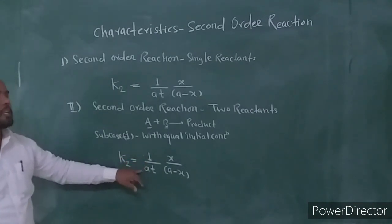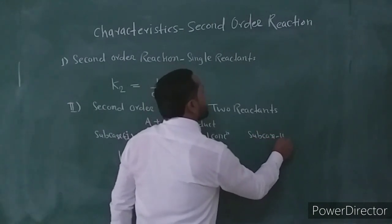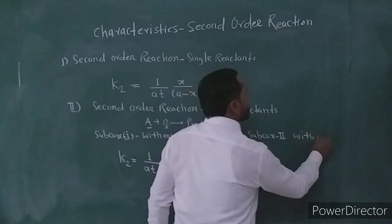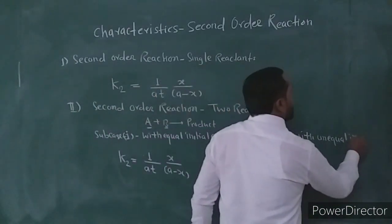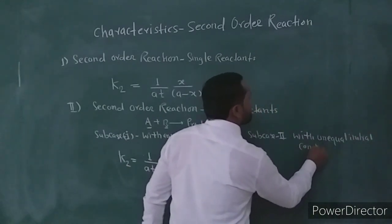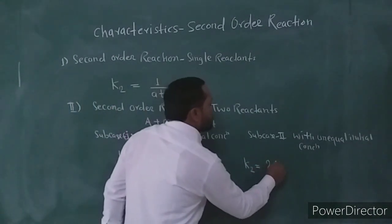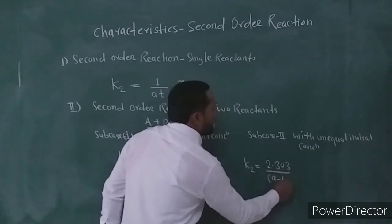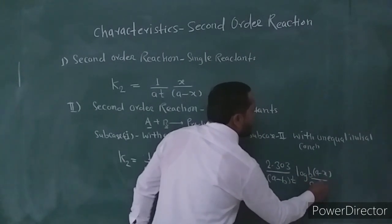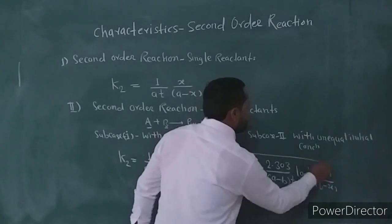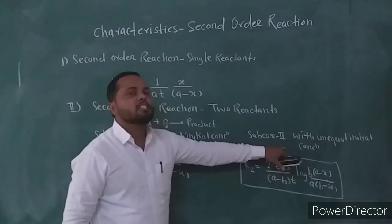Sub-case two: with unequal initial concentration. Reactants A and B have unequal initial concentrations. In this case, the integrated rate equation is: K2 is equal to 2.303 divided by (A minus B) into T, times log of B(A minus X) divided by A(B minus X). This is the integrated rate equation for the second-order reaction involving two reactants with unequal initial concentration.